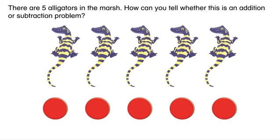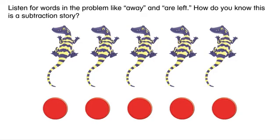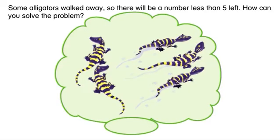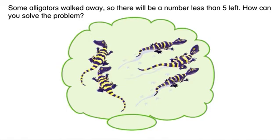How can you tell whether this is an addition or subtraction problem? Listen for the words in the problem like away and are left. How do you know this is a subtraction story? Some alligators walked away, so there will be a number less than five left.